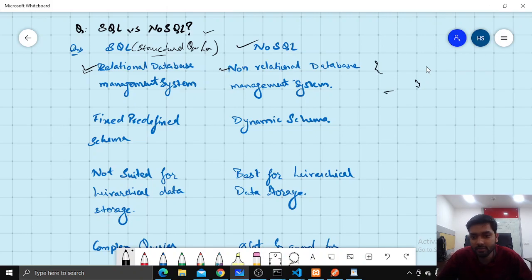Fixed predefined schema. SQL has relational database management system. Not suited for hierarchical storage of data, like if you want to keep another object in one store. That is more easier in a collection kind of database.